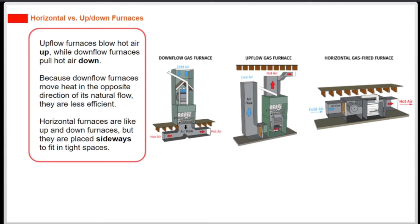Upflow furnaces blow hot air up, while downflow furnaces push hot air down. Because downflow furnaces move heat in the opposite direction of its natural flow, they are less efficient. Horizontal furnaces are like up and down furnaces, but they are placed sideways to fit in tight spaces.